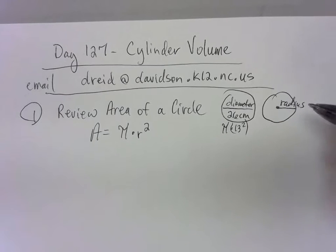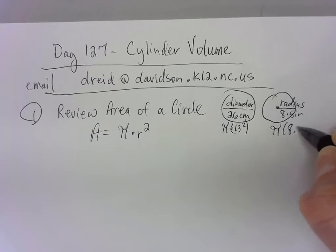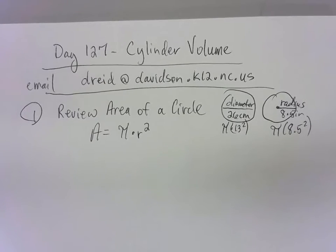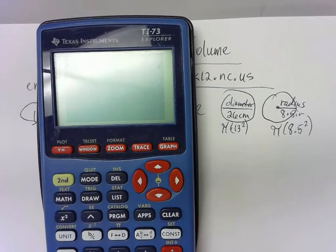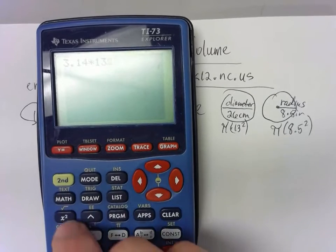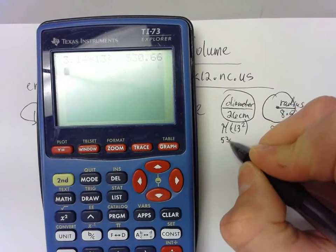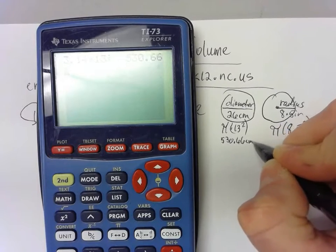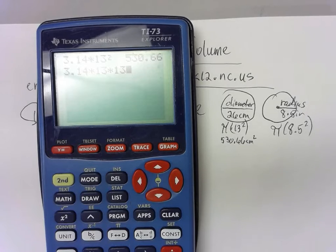If they give you the radius — say the radius is 8.5 inches — you would just do pi times 8.5 squared. If you have a squared button on your calculator, use 3.14 for pi and do pi times 13 squared, which gives you 530.66 centimeters squared. If you don't have a squared button, just do 3.14 times 13 times 13, and you'll get the same answer: 530.66.